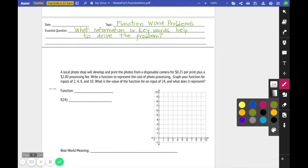So here we go. A local photo shop will develop and print the photos from a disposable camera for $0.25 per print plus a $2 processing fee. Write a function to represent the cost of photo processing. Graph your function for inputs of 2, 4, 8, and 10. What is the value of the function for an input of 24 and what does it represent?